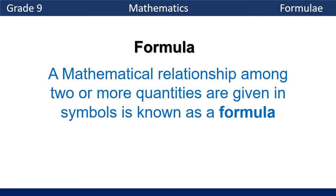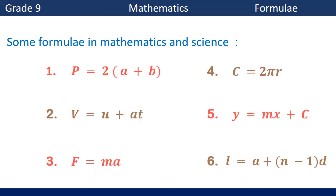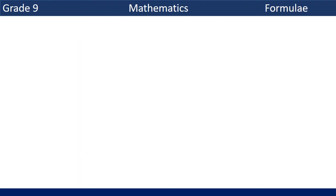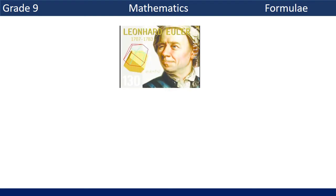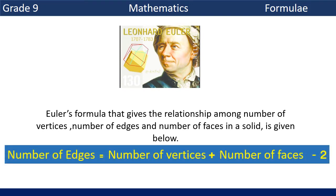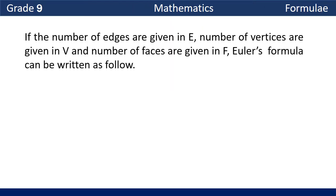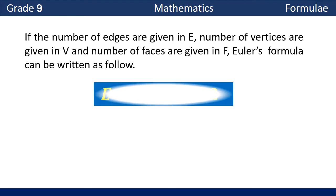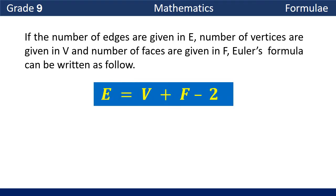Let's discuss what a formula is. A mathematical relationship among two or more quantities expressed in symbols is known as a formula. Now you can see some formulae in mathematics and science. Great mathematician Leonard Euler found a mathematical relationship among the number of vertices, number of edges, and number of faces in a solid. It can be written as: number of edges equals number of vertices plus number of faces minus 2. If edges are E, vertices are V, and faces are F, Euler's formula is E equals V plus F minus 2.